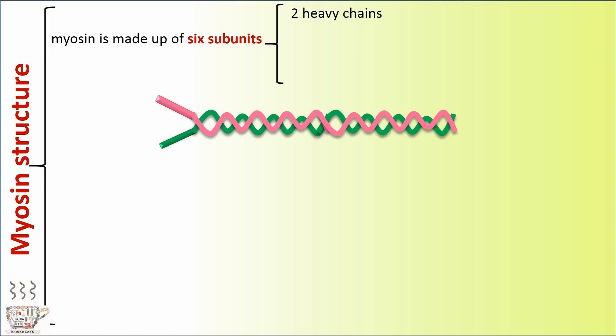Myosin structure. Myosin is made of six subunits: two heavy chains and four light chains.